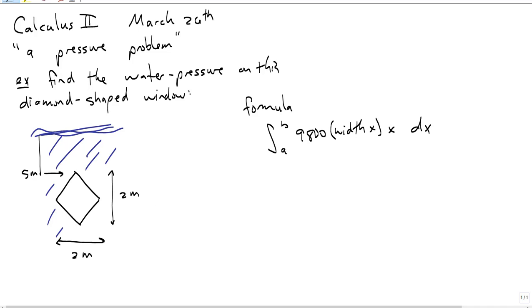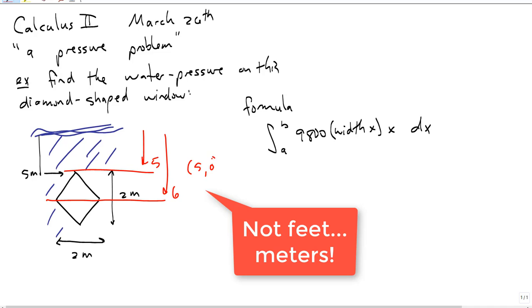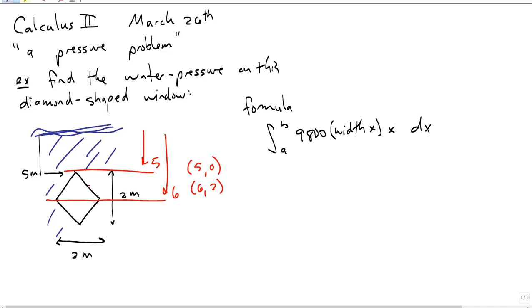Now, this whole thing, we have to break into two pieces. This part is going from a depth of 5 meters to 6 meters. The width at the depth of 5 meters is 0, and at 6 meters it's 2 meters wide. You can see it's increasing linearly - when you're halfway down, it's 1 meter wide. The a and b are the depths.